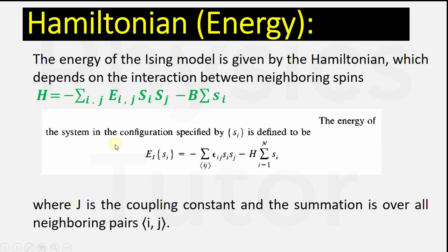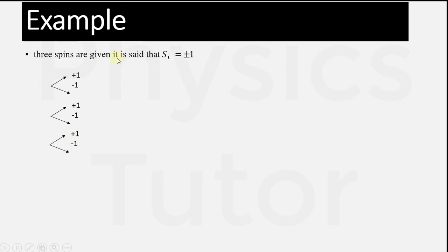The energy of the system in the configuration specified is defined by the Hamiltonian, where J is the coupling constant and the summation is over all neighboring pairs (i and j). For example, with three spins where S_i equals plus or minus one: S1 (first particle) has spin +1 or -1, representing upward and downward spin. Similarly, the second and third particles also take spin values of +1 or -1.